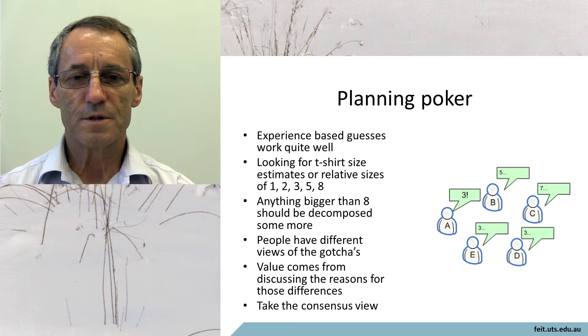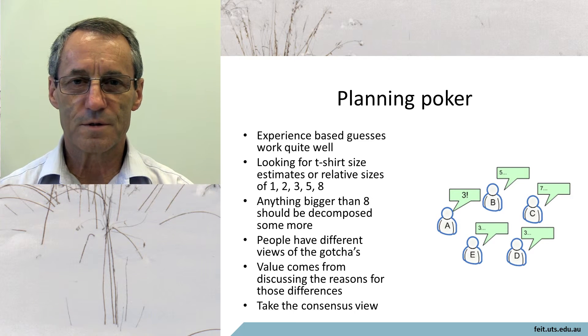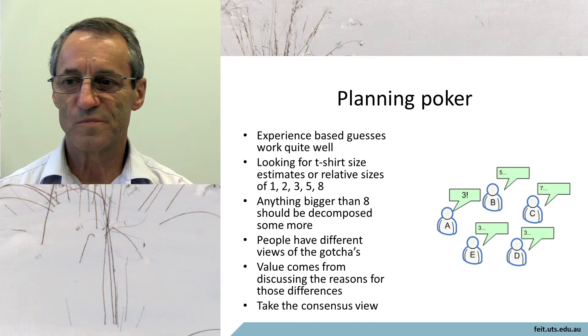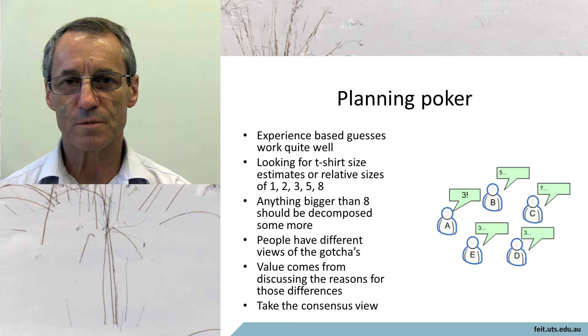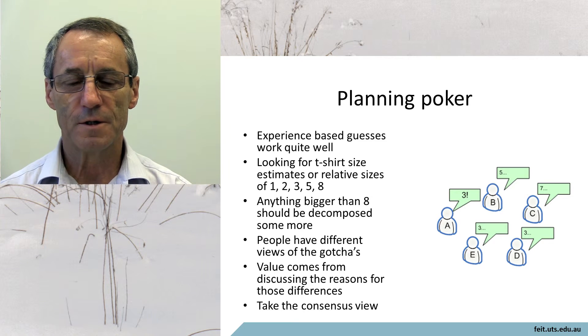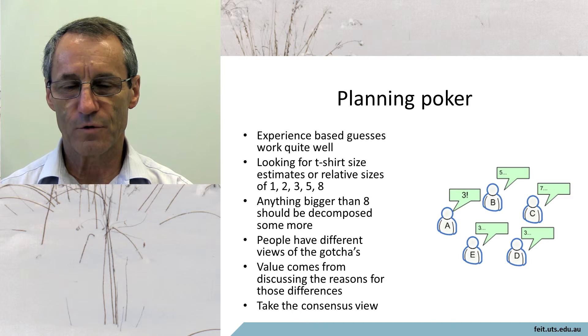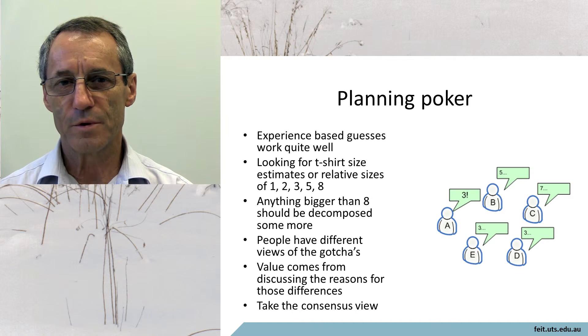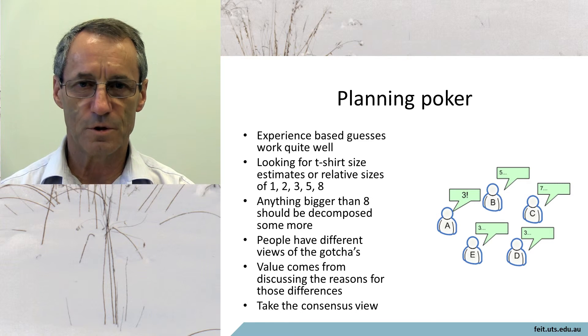What you're looking for is different cards. So the classic example is, if there are five people, three people have bid two, one person bids one, and one person bids five. The question is not, why do all these people agree on the two? But why does that person pick one? What do they know? Why do they think it's such a small job?